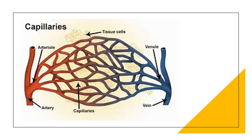Capillaries are only one cell thick. This is ideal since substances like oxygen and glucose must pass out, and carbon dioxide must move in.